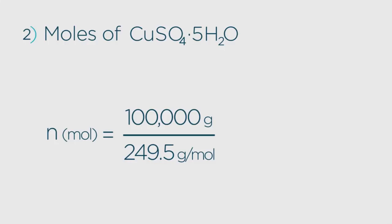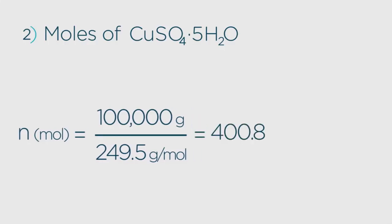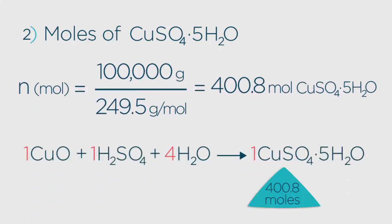100,000 divided by 249.5 equals 400.8 moles. So this is the number of moles of copper oxide we need to add to the acid.